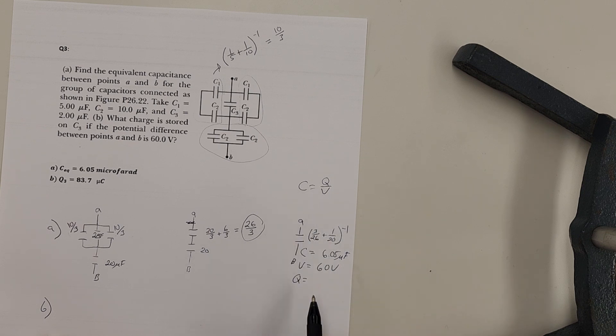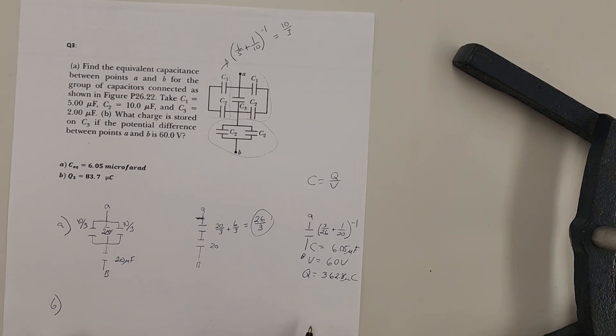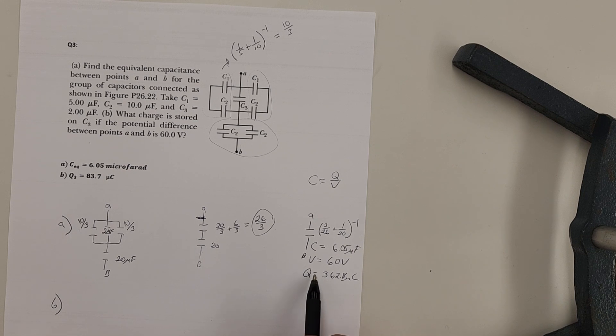Q is just going to be C times V. So when we do C times V we should get 362.8. And this is in micro coulombs because we keep micro for all of it. And then we have to work backward, going back into these. Okay. So we take this charge.